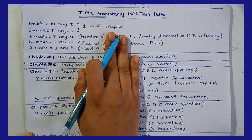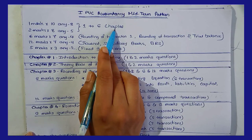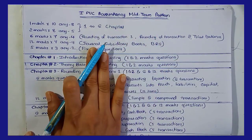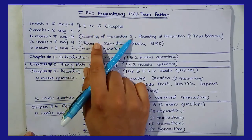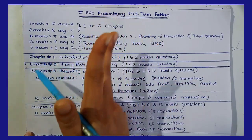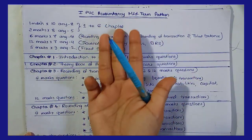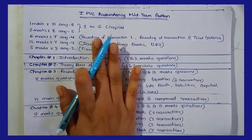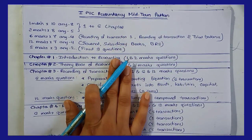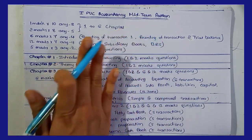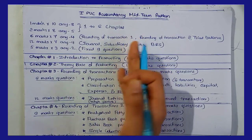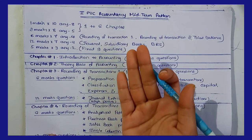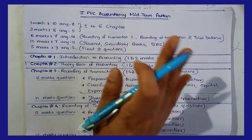The syllabus covers chapters 1 through 6: Introduction to Accounting, Theory Base of Accounting, Recording of Transaction 1 (Journal), Recording of Transaction 2 (Subsidiary Books), Bank Reconciliation Statement, and Trial Balance. This covers almost 45 to 50 percent of the syllabus. Almost two chapters will form the syllabus per district.